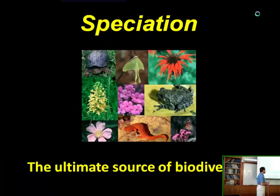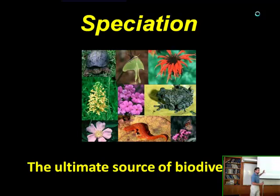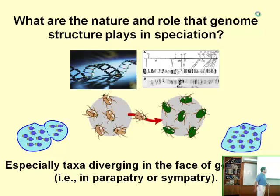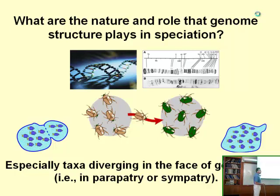Speciation is the ultimate source of biodiversity, and we're trying to understand speciation and biodiversity. Specifically, I want to concentrate on the question of what's the nature and role that genome structure itself might play in speciation. I'm particularly interested in this question with respect to taxa or populations that are diverging in the face of gene flow or migration between the populations.